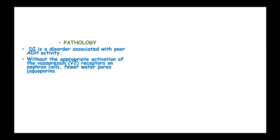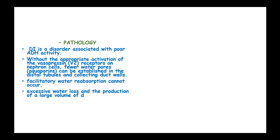Without the appropriate activation of these vasopressin receptors on the nephron cells, fewer water porins will be established, that is the aquaporins. So there will be no facilitated water absorption in the kidneys, and excessive water loss and production of large volume of dilute urine will take place.